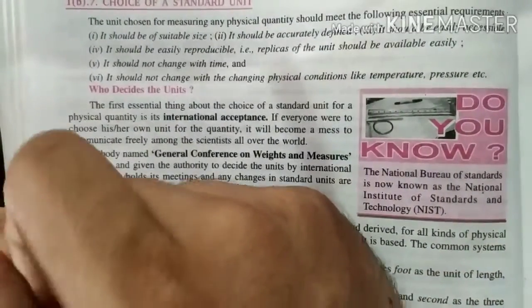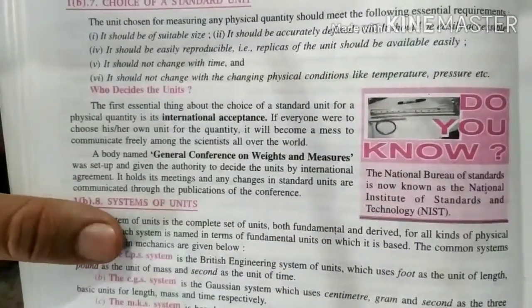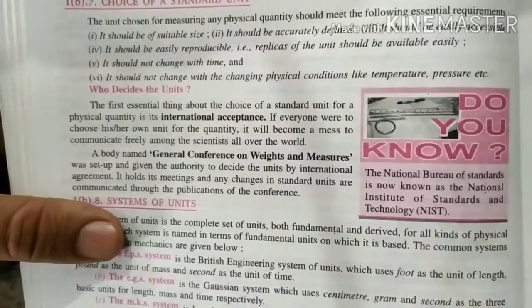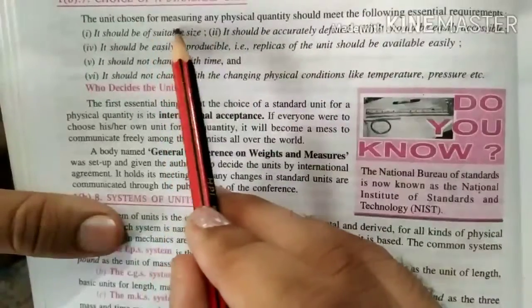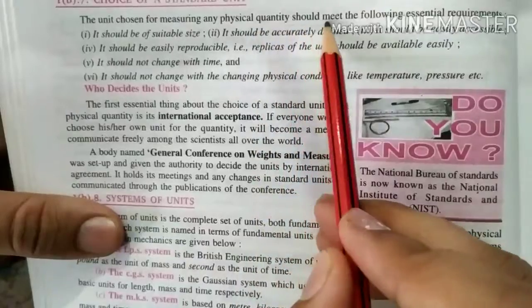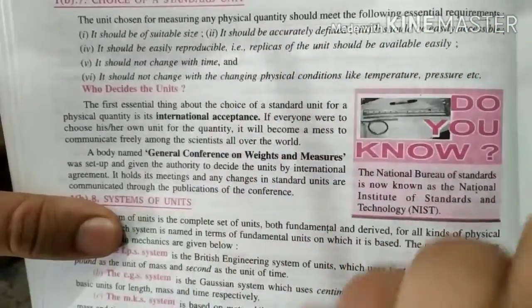Choice of standard. So we have to tell the choice of which unit we need to use. We need to use the unit second, minute, length in meter, kilometer, centimeter, which we need to use. The unit chosen for measuring any physical quantity should meet the following essential requirements which we need to follow.